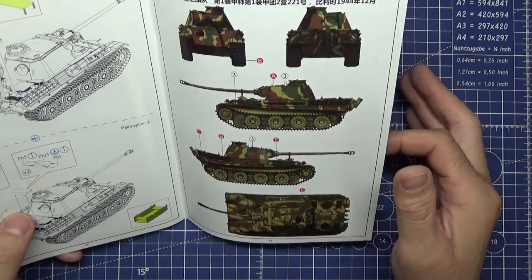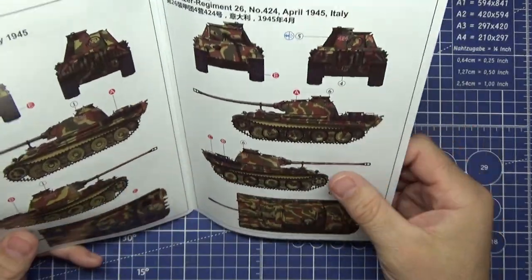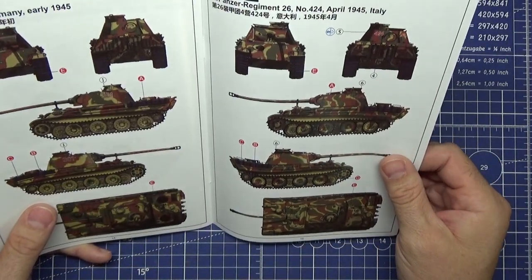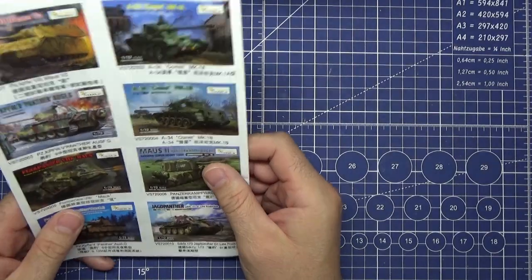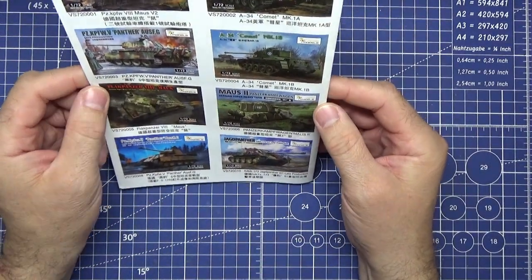There's the camouflage for paint option one, and on this side paint option two and three. On the back are some more 1:72 scale kits showing you the different ones you can get.